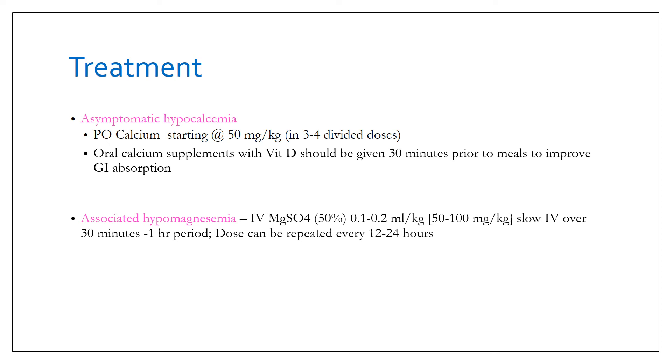If there is associated hypomagnesemia, then you must give IV magnesium sulfate 50%, 0.1 to 0.2 ml per kg, that is 50 to 100 mg per kg slow IV over 30 minutes to 1 hour period, and the dose can be repeated every 12 to 24 hours.